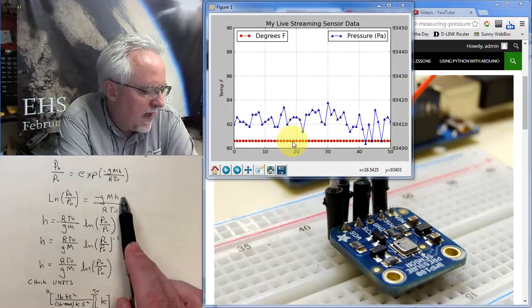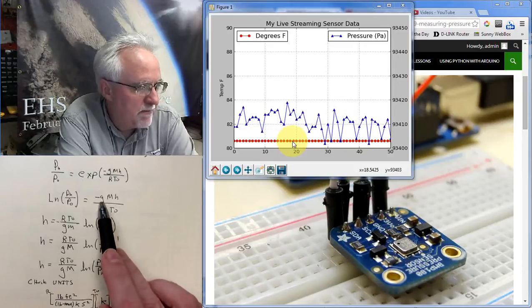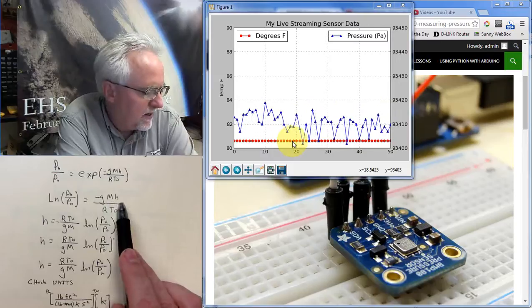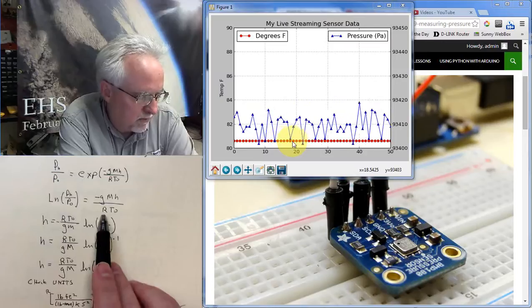And so what do I have to do? I have to multiply both sides by RT and divide both sides by minus gm, and then I'll get H by itself.